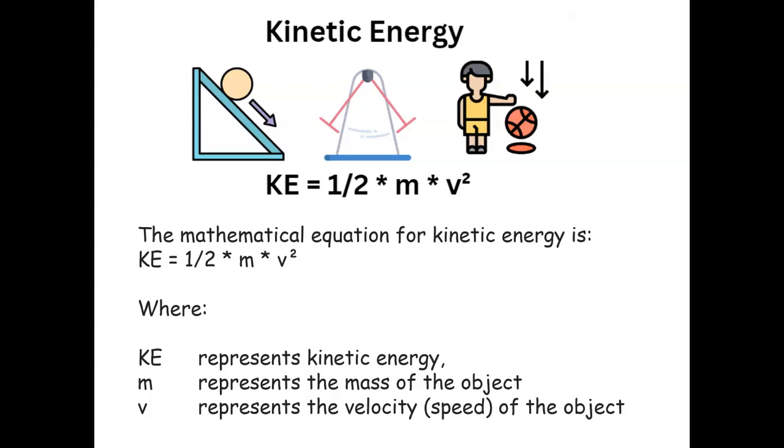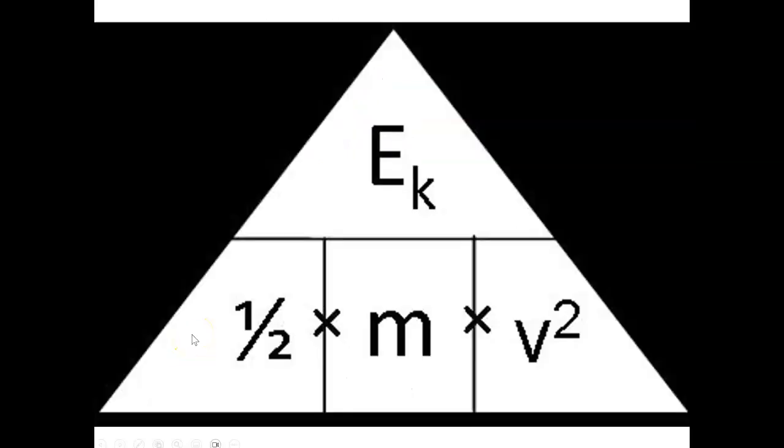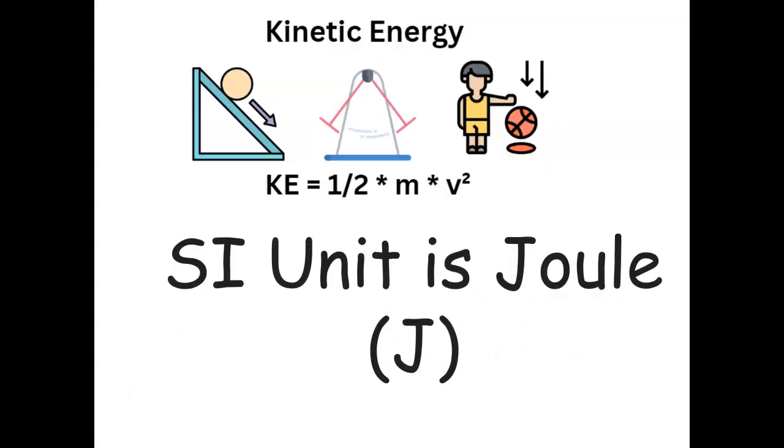Speed is the change of an object over time. We'll be looking at triangles like this as we go along. Here we have kinetic energy, the mass, the velocity, and the SI unit of energy is the joule. So when you see J, it's referring to energy.